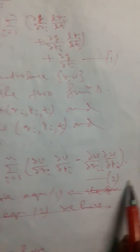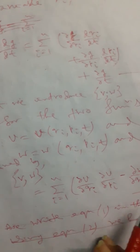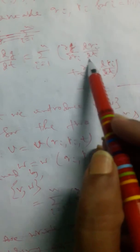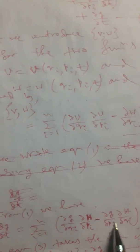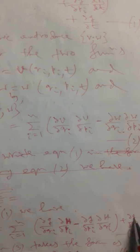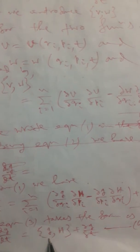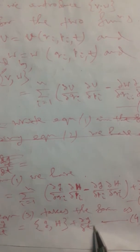Taking equation number two: if we consider the general type of functions and convert them into Hamiltonian functions, then dq/dt is replaced by ∂H/∂pi and dp/dt is replaced by minus ∂H/∂qi. Substituting into dg/dt, we arrive at equation number three: dg/dt equals the Poisson bracket {g, H} plus ∂g/∂t.